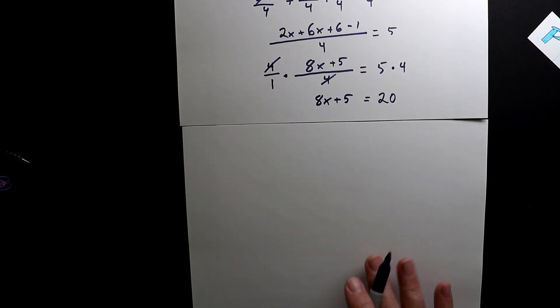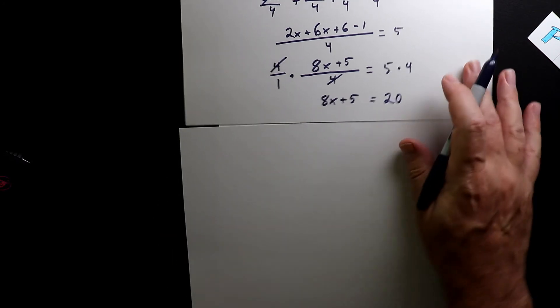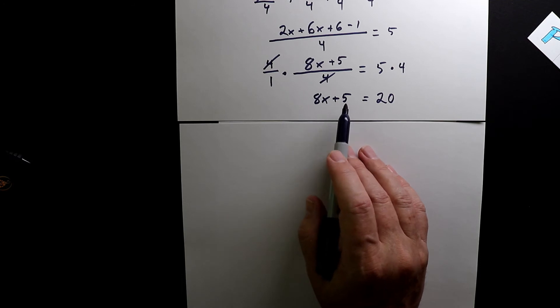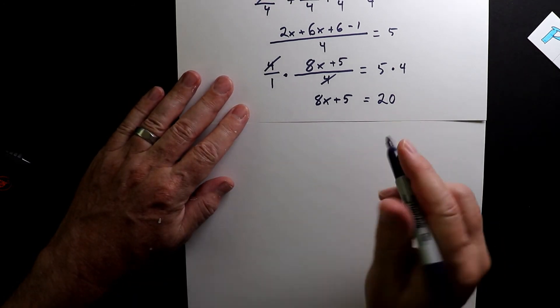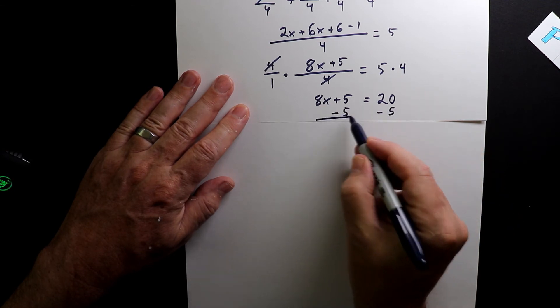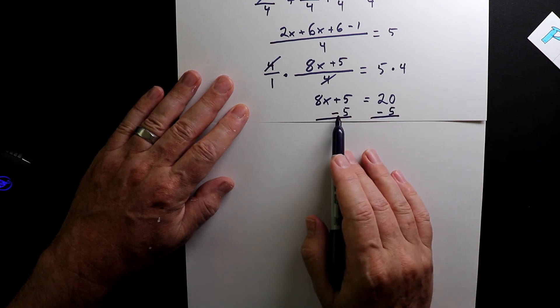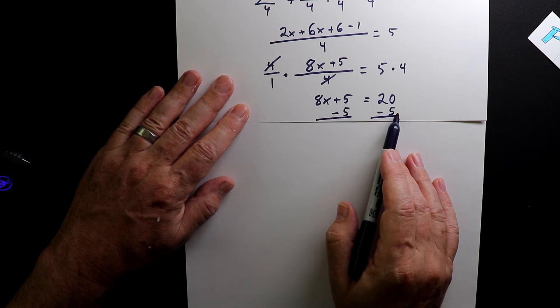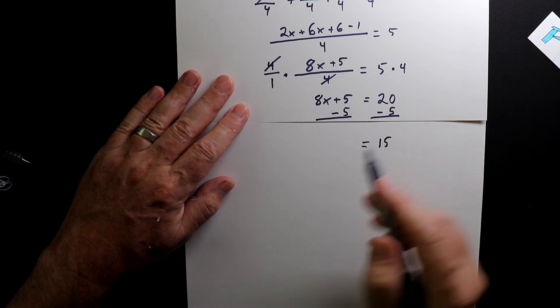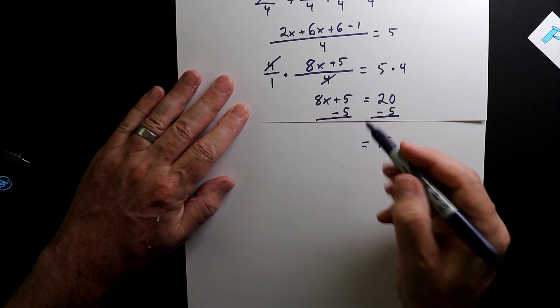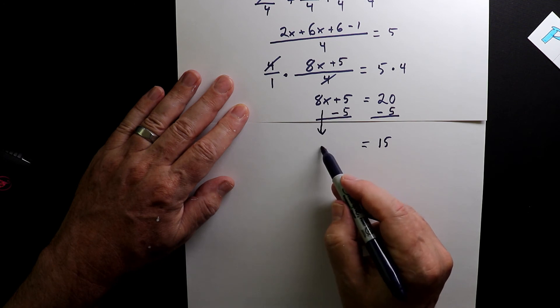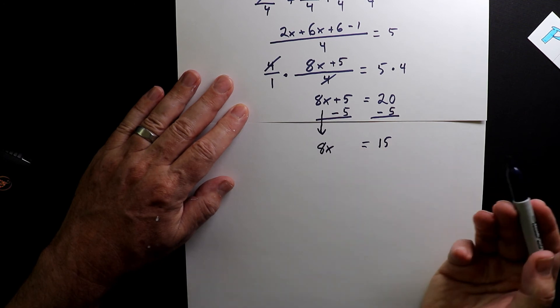So what we have here now is we have 8x plus five equals 20. Now I want to get the x by itself. So the first thing I want to do is I want to get rid of this positive five. So I'm going to subtract five from both sides. Because if I subtract five from the left side, I also have to subtract five from the right side. So 20 minus five is 15. And positive five minus five is zero. So I don't even need to bring down a zero. So all I'm going to do is just bring down this 8x.